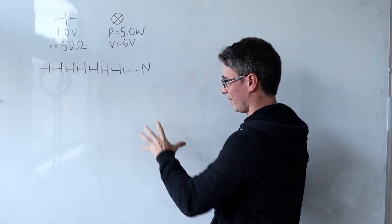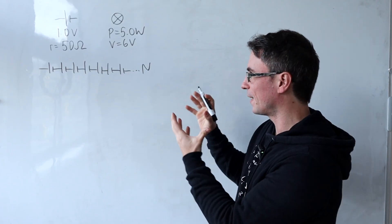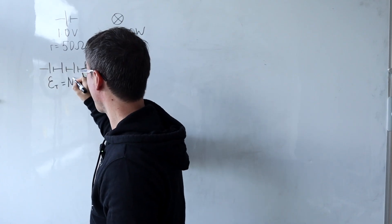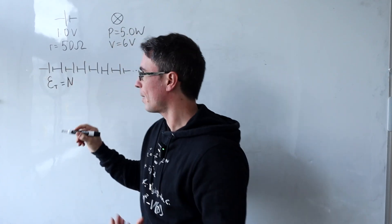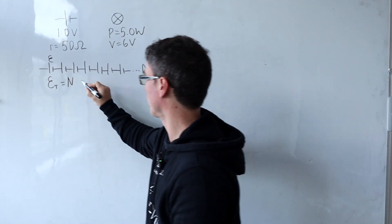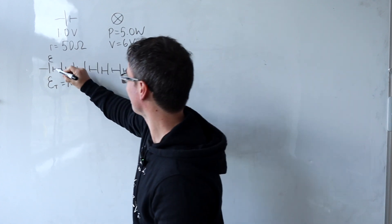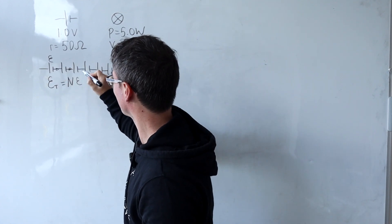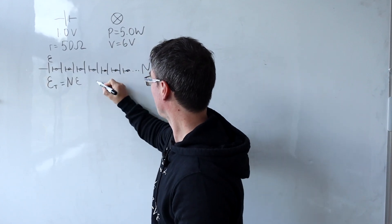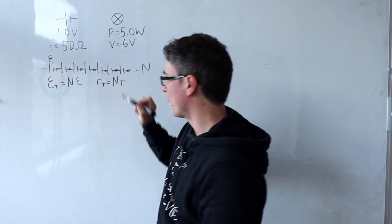So let's say we have N of these cells. The total effective EMF, let's call it E total, is going to be N times the EMF of each individual cell — let's call it E, so E total equals NE. And the total internal resistance, since all of these have little internal resistors in series as well, R total is going to be equal to N multiplied by R.